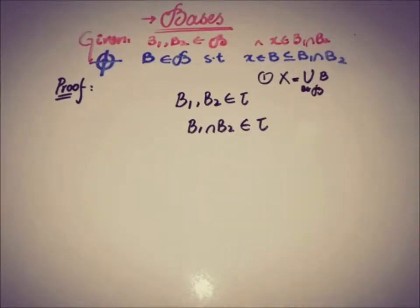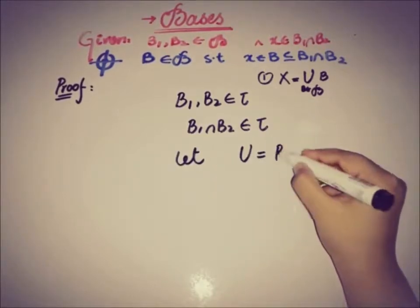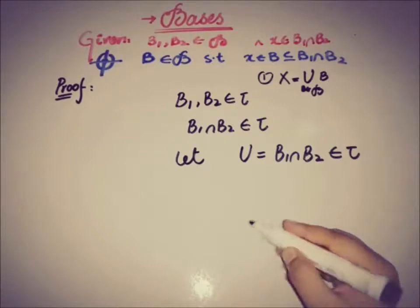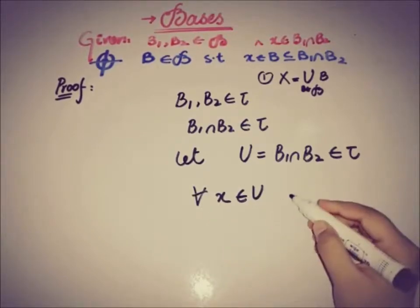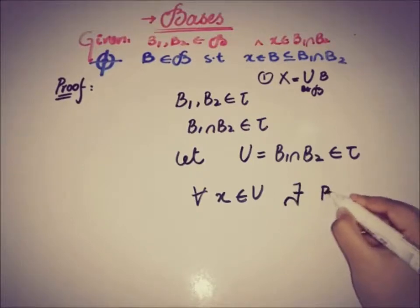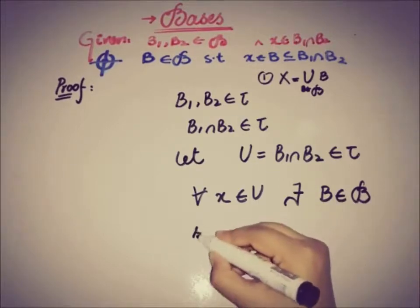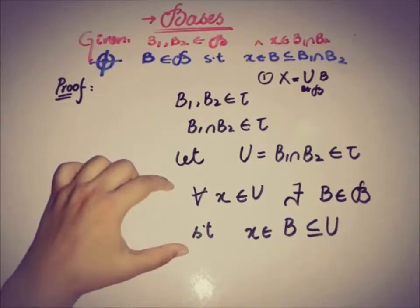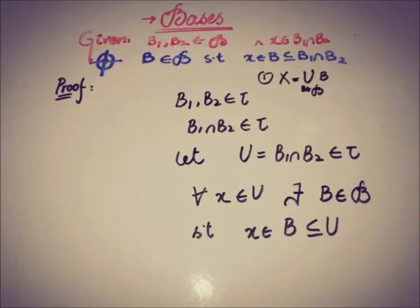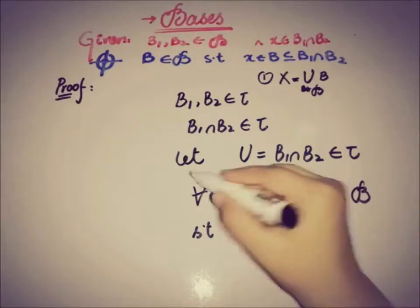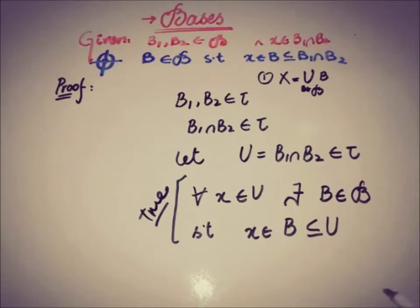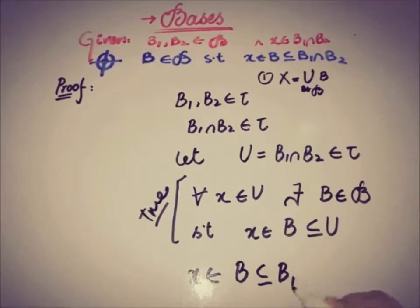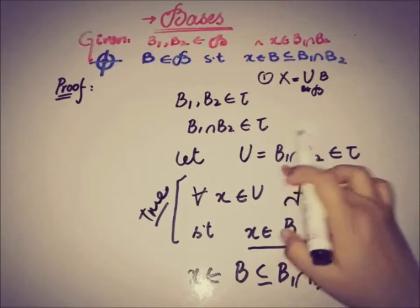The elements of tau are known as open sets. Let U equal b1 ∩ b2, which is a member of tau. We know that for all x belonging to U, there must exist an element b from the basis such that x belongs to b and b is a subset of U. This was the definition proved in one of the previous videos about the sufficient and necessary theorem of the basis. Using this, we can say that x belongs to b and b is a subset of b1 ∩ b2, by replacing U with b1 ∩ b2.